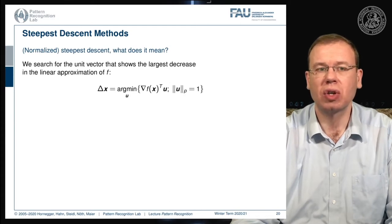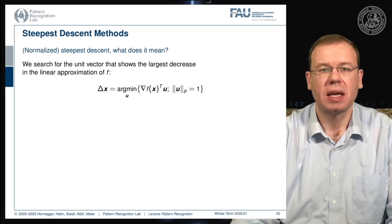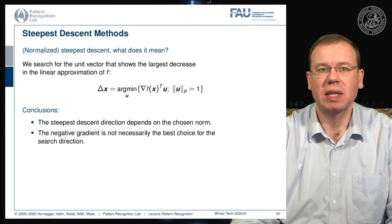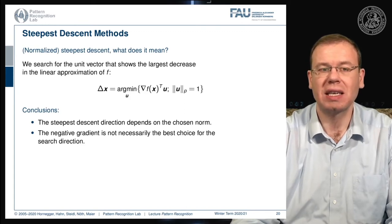We search for the update direction as the minimum over some u that has a length of one according to our norm, then take the projection of the gradient onto this direction. If we do this kind of optimization for selecting the update direction, the steepest direction may not be simply the negative gradient — it may depend on the chosen norm. So the negative gradient is not necessarily the best choice for the search direction.